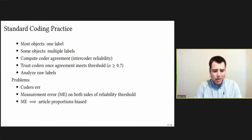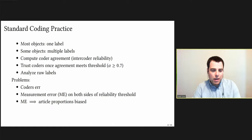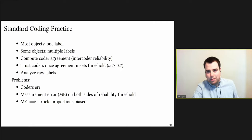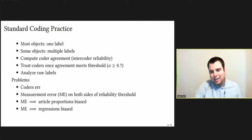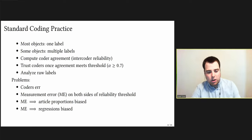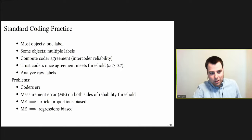One problem we can't escape is that coders err. Some coders are more motivated — because of financial incentives or intellectual investment — while others are just trying to get by. When coders make mistakes, either intentionally or unintentionally, this induces measurement error. That measurement error exists on both sides of reliability thresholds. Regardless of whether reliability hits 0.7 or not, there will always be some measurement error when trusting coders, and this will bias our analyses. For example, proportion estimates of pro-democratic or pro-republican articles will become biased in possibly unknown directions. Measurement error also biases regression estimates whether the coder labels are used as independent or dependent variables.